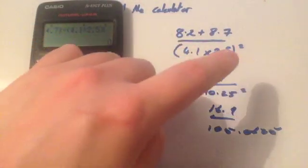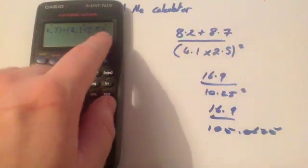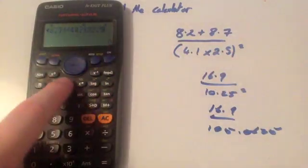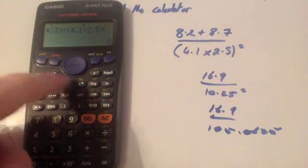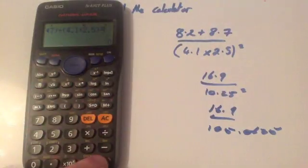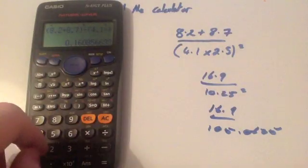You need to make sure that you're closing brackets before pressing the squared. If you press the squared before closing brackets, if I delete and press squared there, your calculator would just square the 2.5. So you need to close brackets, and then press squared, and then press equals, and then you've got your answer. Okay?